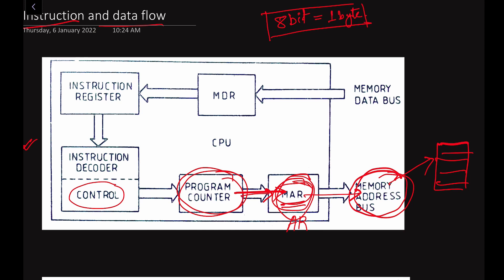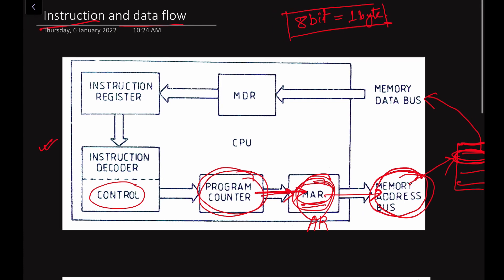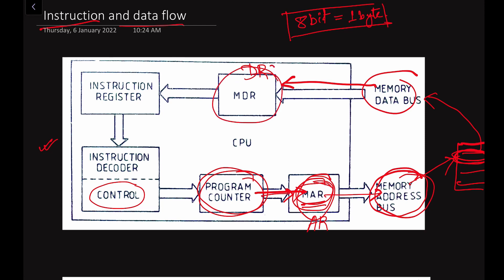After decoding, the decoder unit tells the memory whether it has to read or write. Then the memory sends the opcode to the data bus. After getting the memory address, whatever the content of that memory address is, it will be sent to the memory data bus. The memory sends the opcode — since we are talking about the instruction flow — and this opcode comes to the MDR, the Memory Data Register, sometimes also called the data register. In the case of 8085, it is called the data buffer.